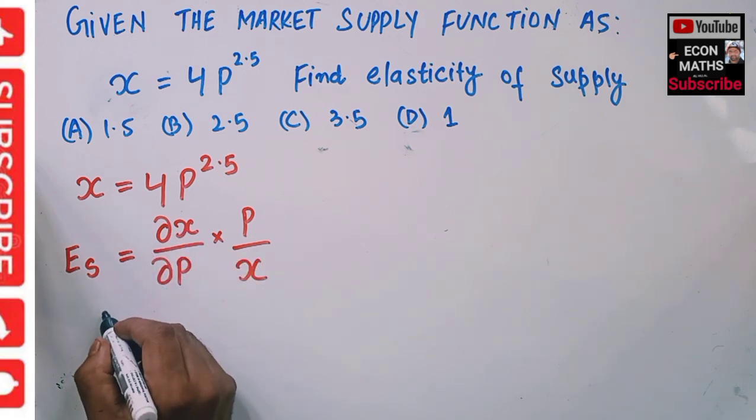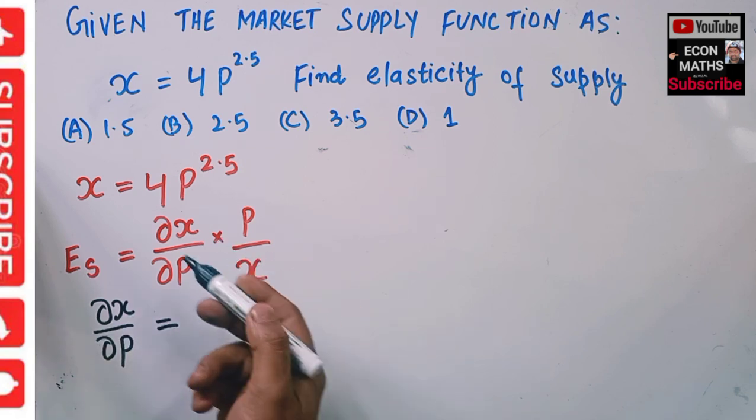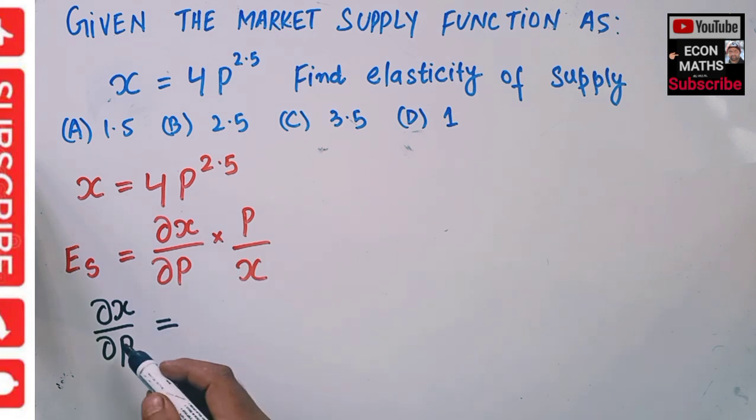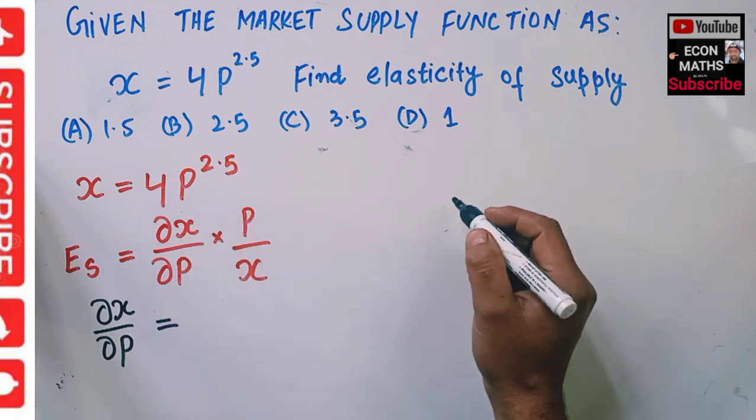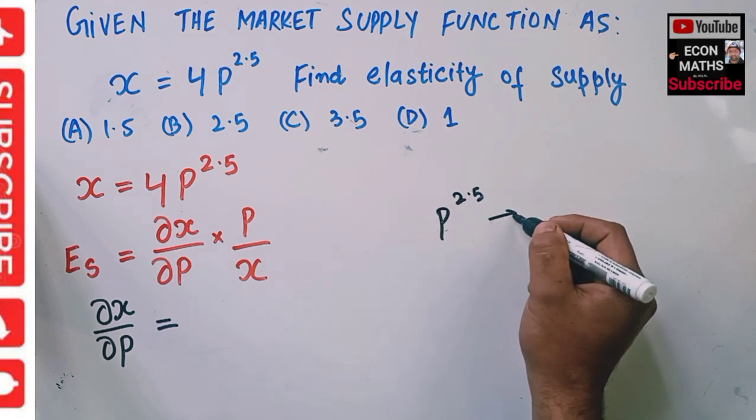dX/dP will be equal to, given this supply function, we take the partial with respect to price. So we have P^2.5, and its derivative is simply: this 2.5 will become the coefficient of P.